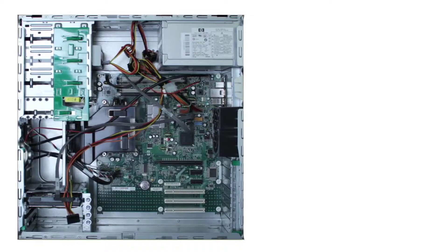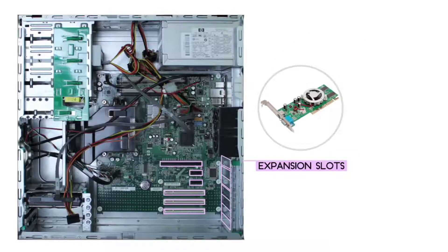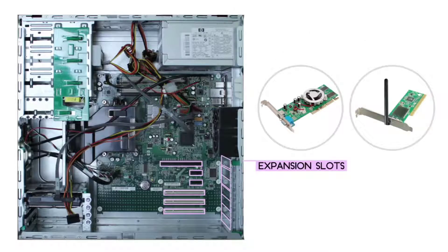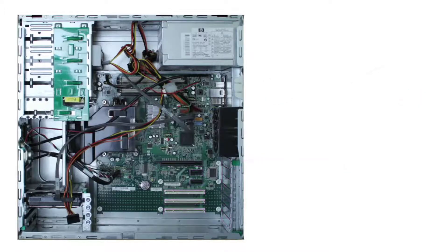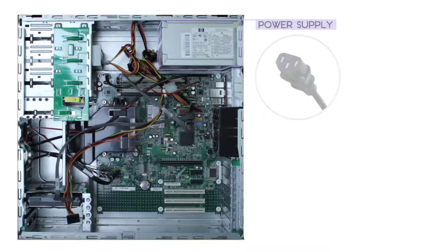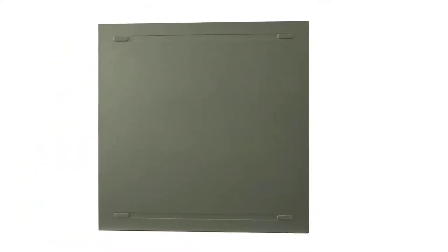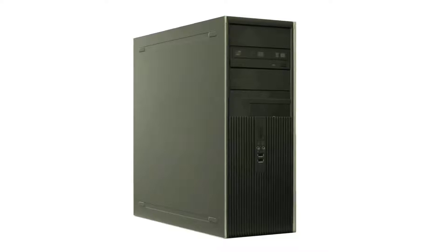If you want to upgrade your computer, you can add expansion cards to the motherboard's expansion slots. You can add a video card for better graphics performance, or a wireless card to connect to your wireless home network. Your computer's components also need electricity to run — the power supply unit takes power from the wall outlet and sends it to all the different components. A desktop computer is a pretty complex machine, but now that you've seen what goes on inside, it should be a little less mysterious.